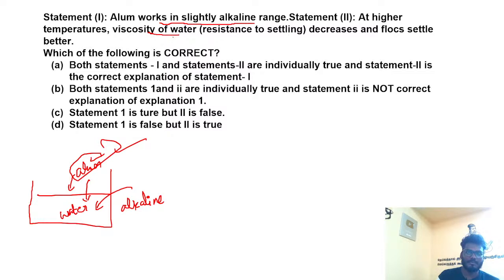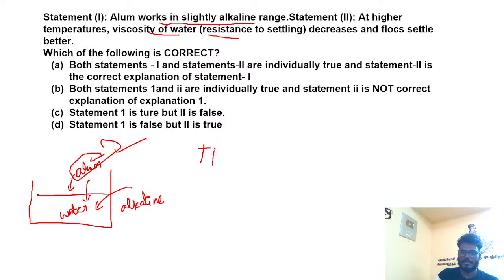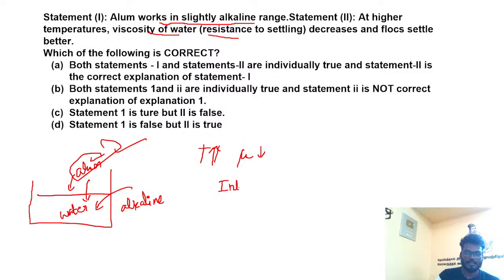At higher temperature, viscosity of water decreases and flocks settle better. Now, temperature is a little more. Viscosity is a property of liquid. Viscosity develops due to intermolecular cohesion.